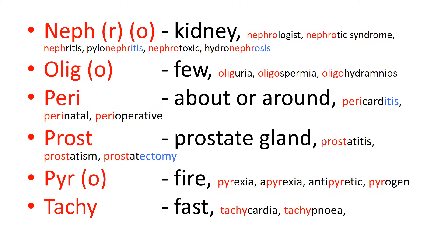'Peri' means about, around, or surrounding. Pericarditis — the pericardium is the layer around the heart — so pericarditis is inflammation of that pericardial layer. Perinatal is the time around birth — just before, during, and just after birth. We also talk about perioperative care — the care of the patient before surgery, during surgery, and in the post-operative period.